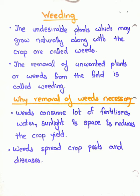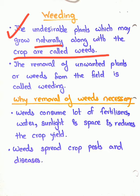The first topic is weeding. So what are weeds? The undesirable plants which grow naturally and gradually along with the crop are called weeds. These are undesirable, unwanted plants which naturally grow in the fields along with the crop. The crop is what we intentionally grow in the fields, while the unwanted plants growing alongside are called weeds.